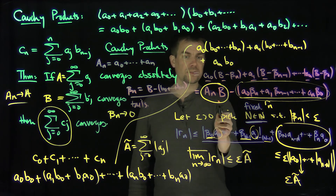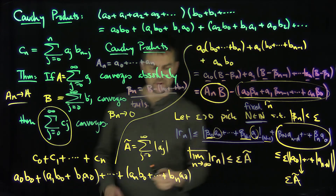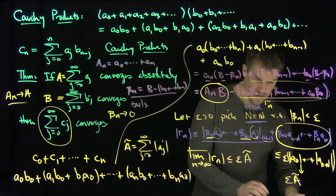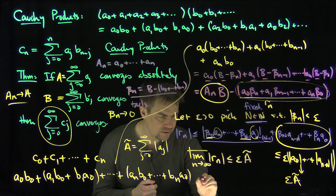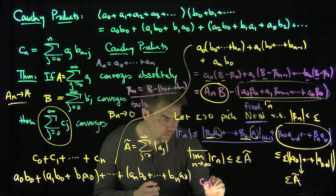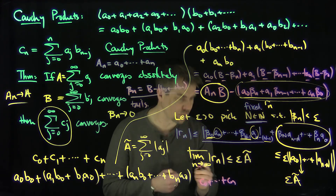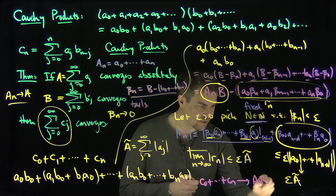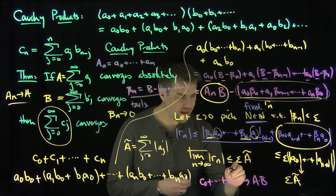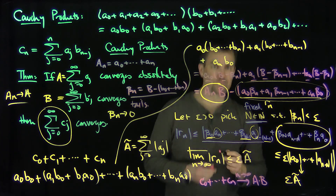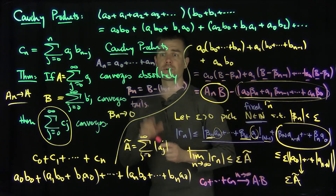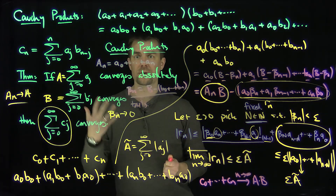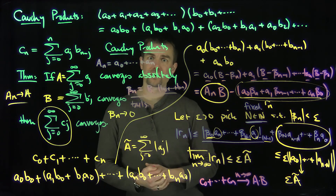The conclusion is that the cn partial sums — c0 plus all the way down to cn — these Cauchy product partial sums tend to A times B as n tends to infinity. We've just proven that the Cauchy product converges under the assumption that one of the series converges absolutely and the other series just converges. Thank you very much.